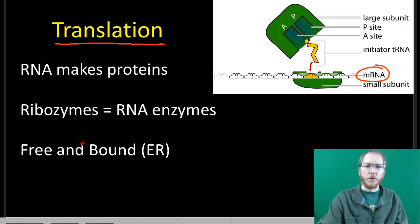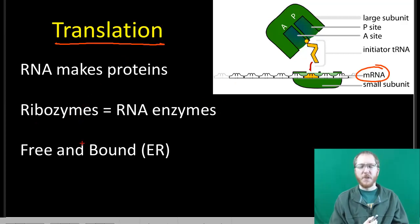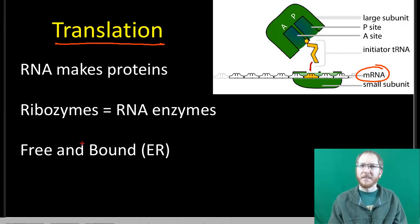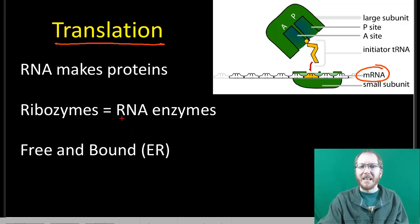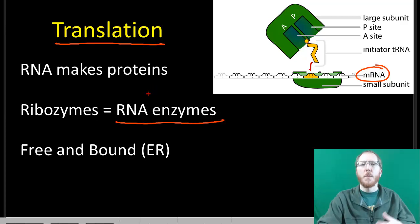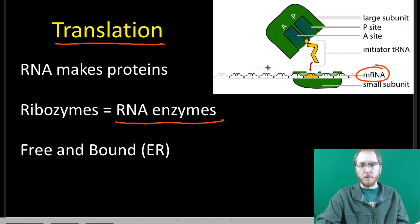The ribosomes will ultimately have RNA pieces that act as something called ribozymes. You have ribonucleic acid — that's what RNA is — and the 'zyme' part is like enzymes, our catalysts. So these will essentially be RNA enzymes. Enzymes are proteins, but there's an RNA version of them, so we call them ribozymes instead. That's what the RNA functions as in the ribosome, which allows it to make protein.